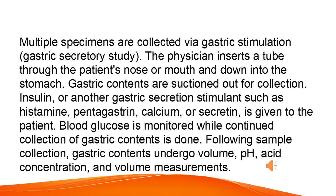Multiple specimens are collected via gastric stimulation for a gastric secretory study. The physician inserts a tube through the patient's nose or mouth and down into the stomach. Gastric contents are suctioned out for collection. Insulin or another gastric secretion stimulant such as histamine, pentagastrin, calcium, or secretin is given to the patient. Blood glucose is monitored while continued collection of gastric contents is done. Following sample collection, gastric contents undergo volume, pH, acid concentration, and volume measurements.